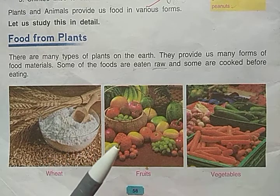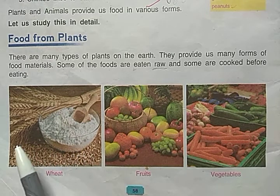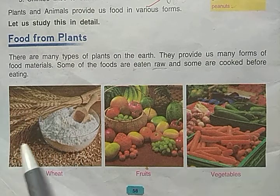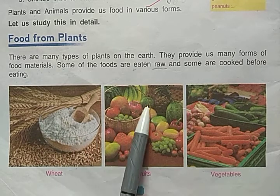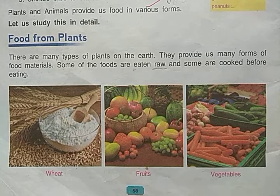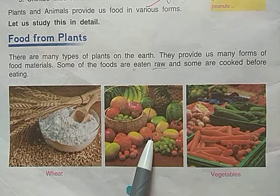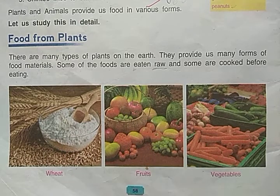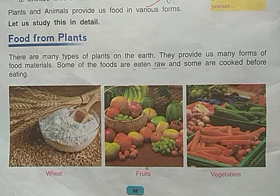You can see in the picture different food items we get from plants. From wheat, we get flour — atta — from which we make chapati. We also get fruits like grapes, apples, and bananas, which we eat in raw form. And we get vegetables — some we eat raw and some we cook. In the next video, we will discuss the different parts of plants that we eat.